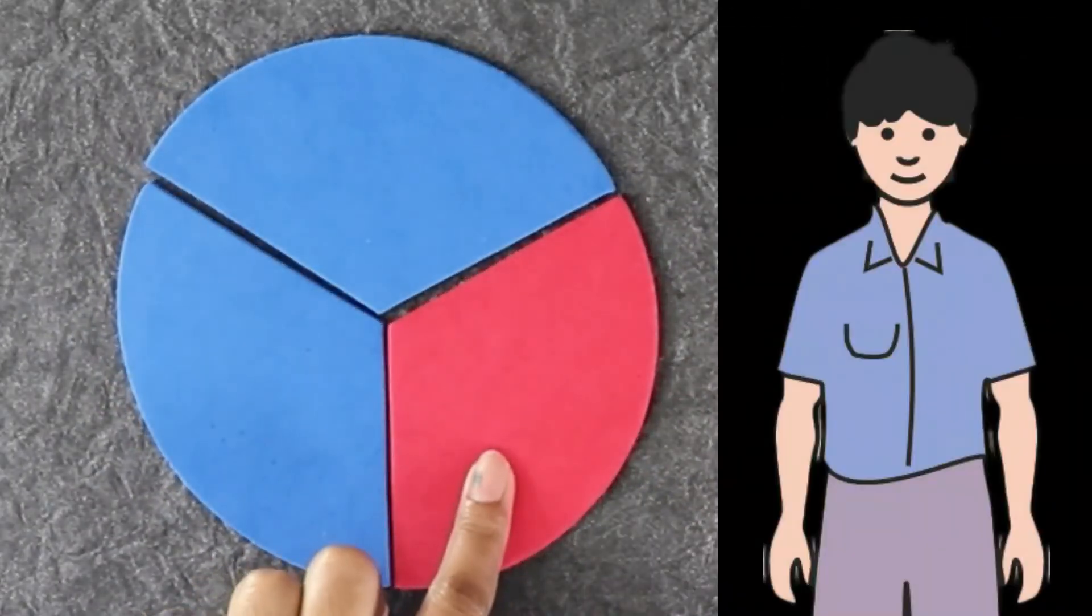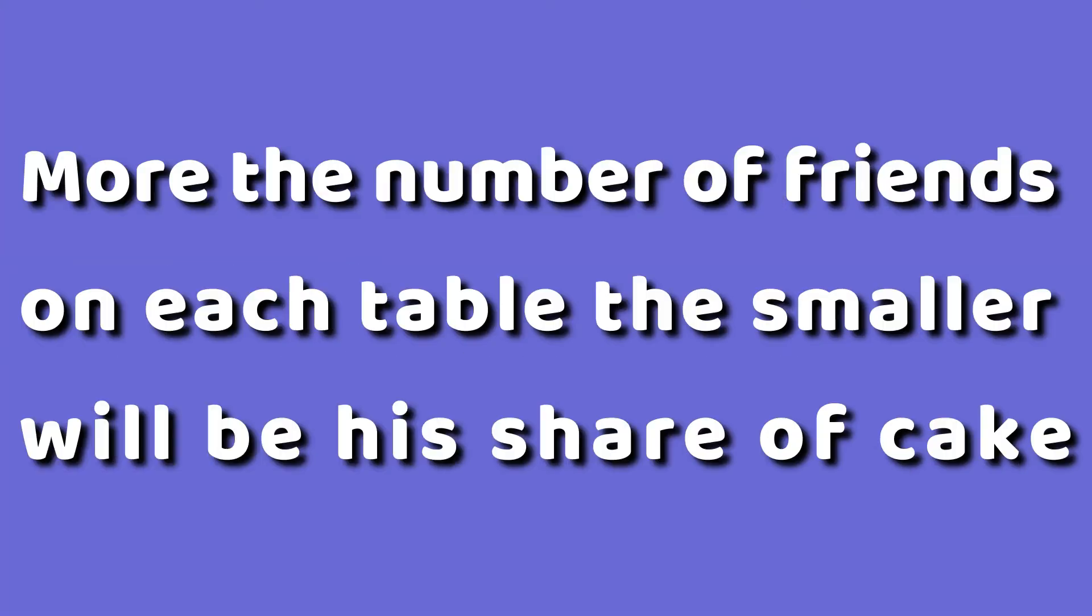Yes, you are correct. It's table 1. Arun comes to the conclusion that more the number of friends on each table, the smaller will be his share of cake.